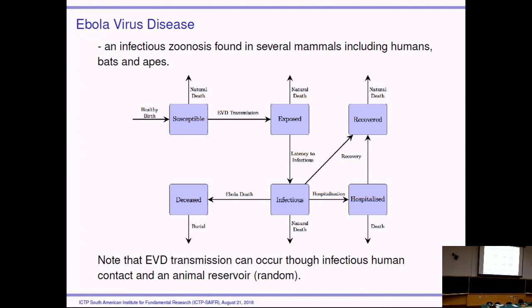A susceptible person can become infectious through a mass action term. They go into an exposed group because they're not immediately infectious — the disease builds up before they become infectious, then they move down to infectious. Once infectious, they can either go to the hospital or not. They can either recover, which is good, or die, which is bad — this is an Ebola death because it has high mortality. Also, when people are deceased and handled, they were actually spreading the disease as well. So there were a couple of ways this disease spread — through infectious human contact and through the animal reservoir, which is random.